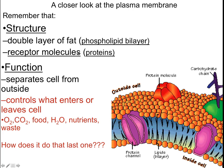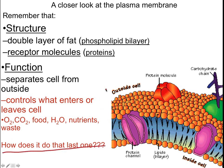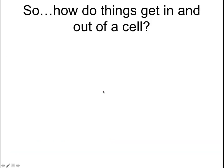Cell transport. We've got to take a quick look back at the plasma membrane that we covered before. It's a double layer of fat — a phospholipid bilayer. It's got receptor molecules on it and different proteins to help things come across this plasma membrane. The function is to separate the outside from the inside, but the other function is to control what enters or leaves the cell. So how does it do that? How do things get in and out?